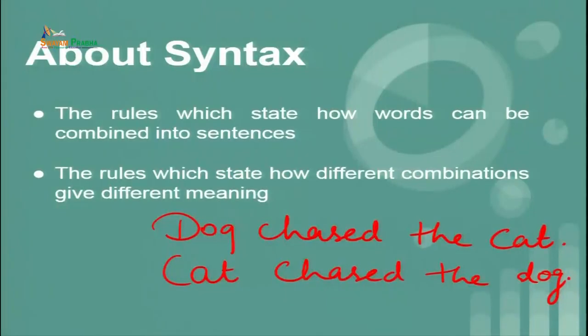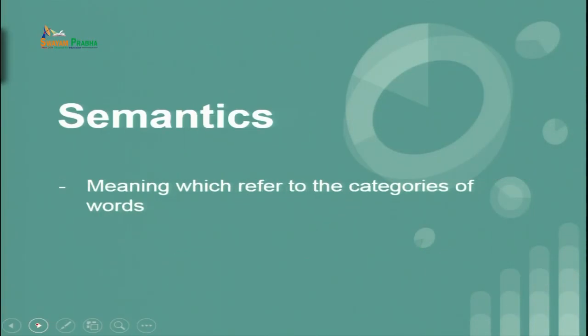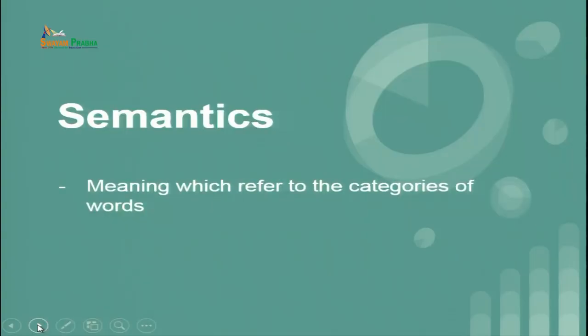When we talk about syntax we also refer to semantics, because with a change in arrangement the meaning also gets changed. Semantics refers to the meaning derived from the categories of words. Semantics and syntax go hand in hand — semantics is the possibility where we refer to the meaning being derived from the categories of words.